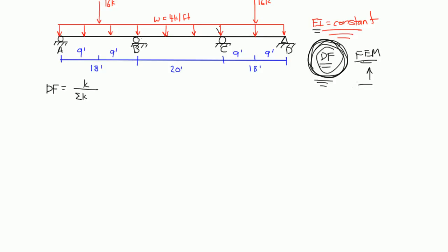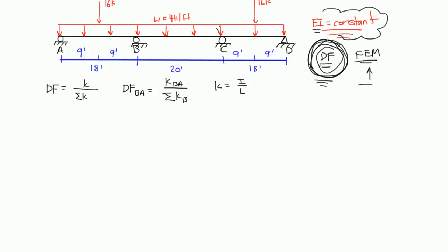If we're focusing on joint B and we wanted the distribution factor for the left side of B, or BA, it'd be the K value of BA divided by the sum of the K around joint B — so the K value of span AB plus the K value of span BC. Your K value is equal to I over L, and up here we said EI is actually constant, so just keep that in mind.